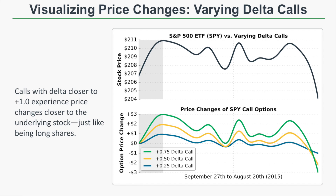Let's visualize the price changes of three different call options with varying deltas on the S&P 500 ETF (SPY). The green line is a 0.75 Delta call, the yellow line is a 0.50 Delta call, and the blue line is a 0.25 Delta call. The 0.75 Delta call is clearly the most sensitive to changes in the stock price, while the 0.25 Delta call is much less sensitive to those same changes. The closer the Delta is to zero, the less sensitive the option is.